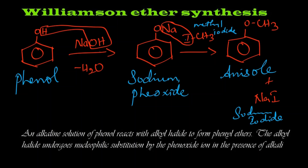If we want phenetole — that is ethyl phenyl ether — instead of CH₃ there will be CH₂CH₃. To prepare phenetole, instead of methyl iodide we need to take ethyl iodide.